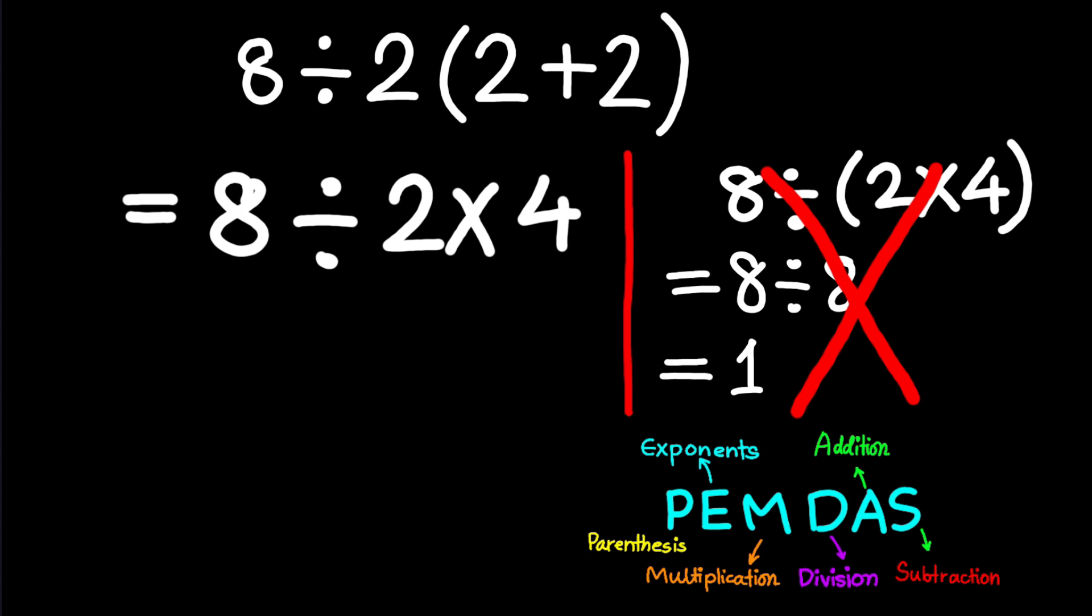Multiplication and division have the same priority, and we work them from left to right, in the order they appear. So, here, after solving the parentheses, we have 8 divided by 2 times 4.